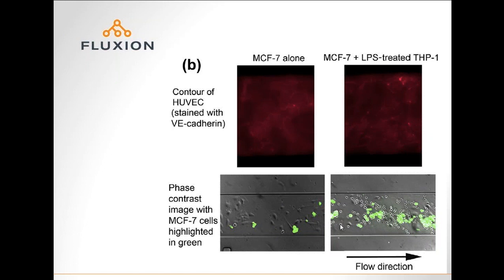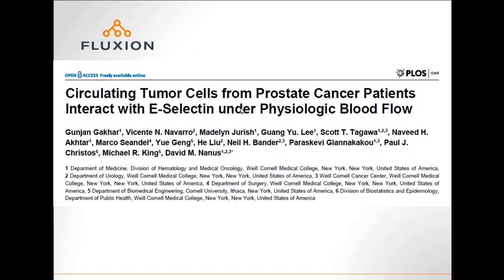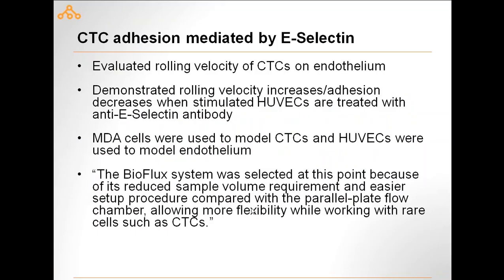The top panel shows HUVEC cells stained with VE-cadherin, showing activation qualitatively. The bottom panel shows fluorescently labeled MCF-7 cells, with THP-1s also visible in phase on the right side. On the left, it's just MCF-7s binding to the HUVEC monolayer. On the right panel, it's MCF-7s plus THP-1s binding to the HUVEC monolayer — you see the circular THP-1s helping to mediate the adhesion of the fluorescently labeled MCF-7s.